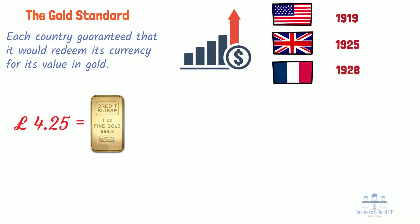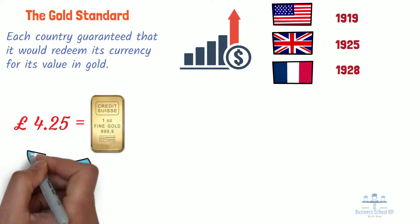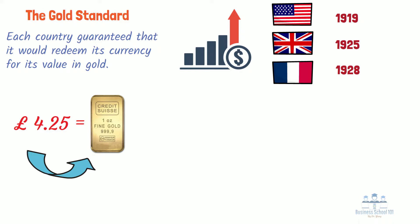When foreign holders of pounds lost confidence in Great Britain's commitment to maintaining its currency's value, they began converting their holdings of pounds into gold. The British government saw that it could not satisfy the demand for gold without seriously depleting its gold reserves, so it suspended convertibility in 1931.